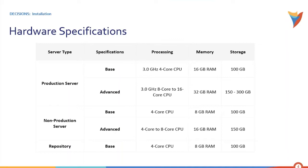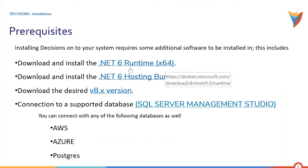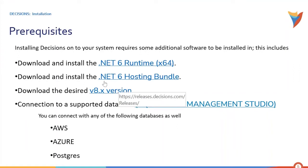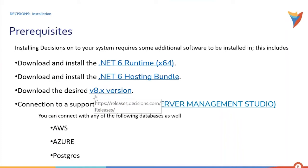The prerequisites required while installing Decisions are .NET 6 Runtime (64-bit) and the .NET 6 Hosting Bundle. For ease of demonstration, I have already installed .NET 6 Runtime. The desired version of Decisions is v8 — in previous versions you might have installed v7 or v6, but the current version is v8, which we will be installing today.